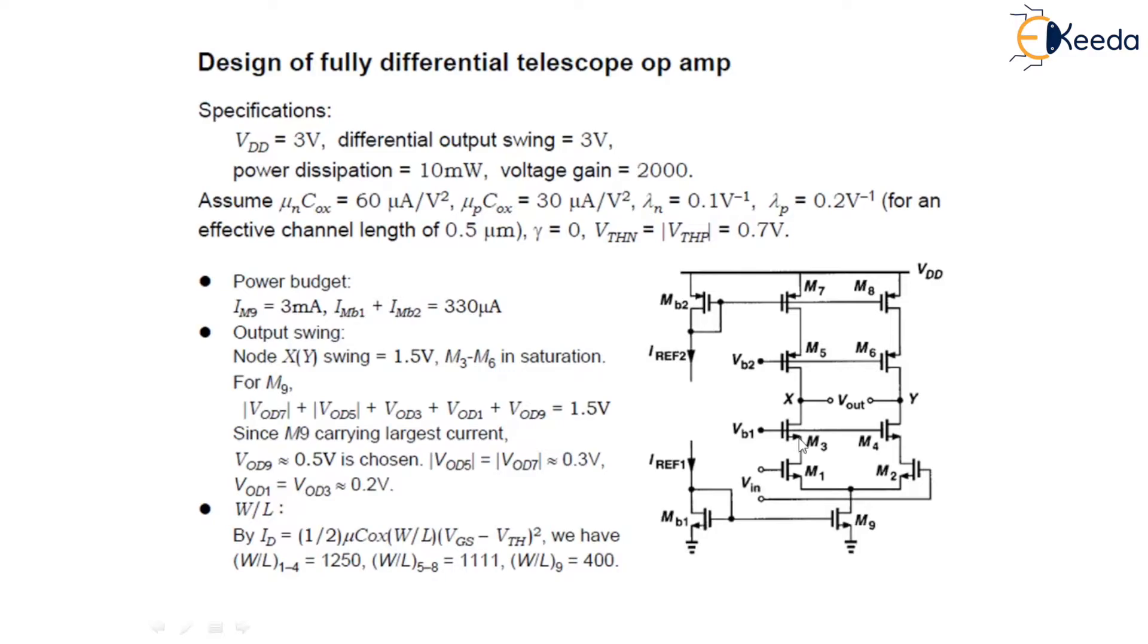So, this VOD5 is equals to 1.5 millivolts as M9 carries the largest current. So, VOD9 is equals to 0.5 volts where it's chosen. Now, this VOD5 is equals to magnitude of VOD7 equals to 0.3 volts and VOD1 and VOD3 will be equals to approximately 0.3 volts.